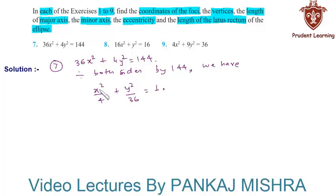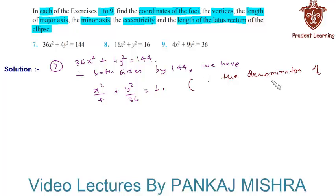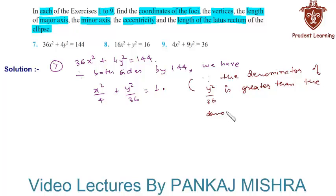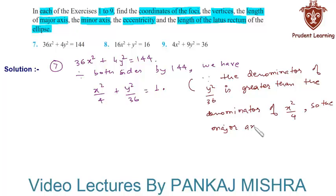Now, since the denominator of y²/36 is greater than the denominator of x²/4, we can say that the major axis of this ellipse is along the y-axis.